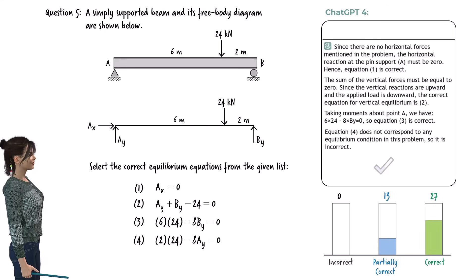For this question, ChatGPT gave a partially correct answer. While it correctly identified equations 1 through 3 as valid, it made an incorrect assertion by stating that equation 4 does not correspond to any equilibrium condition.